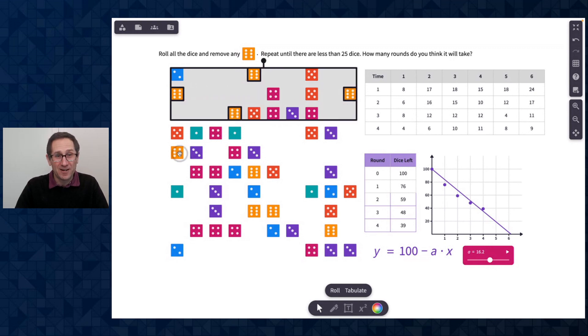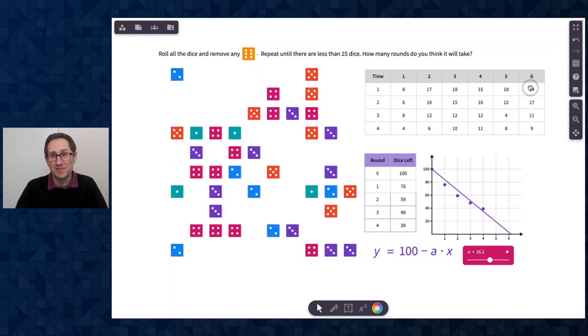And at some point in the conversation with students, you might want to talk about how it seems like the number of sixes is going down every time. First, it was 24, then 17, then 11, then nine. And obviously, this would depend on where you are in your conversation and learning about functions with students. But this function, it's assuming the same amount of sixes are being taken away every time. And as we do more and more rounds of this, that number is going down.